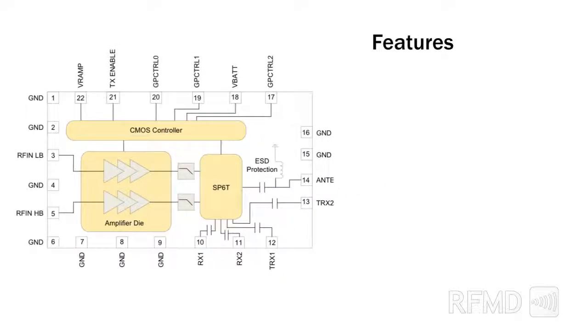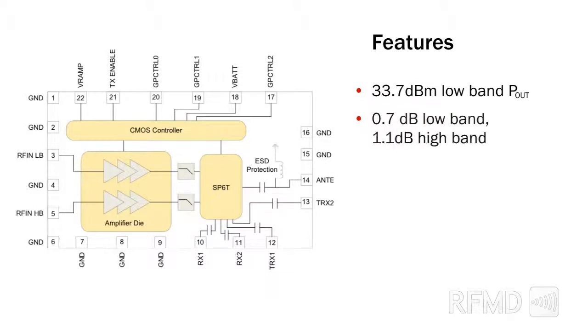Features of the RF3230X family include excellent power margin for ease of design and calibration, and low insertion loss transmit receive switch ports for improved 3G efficiency.